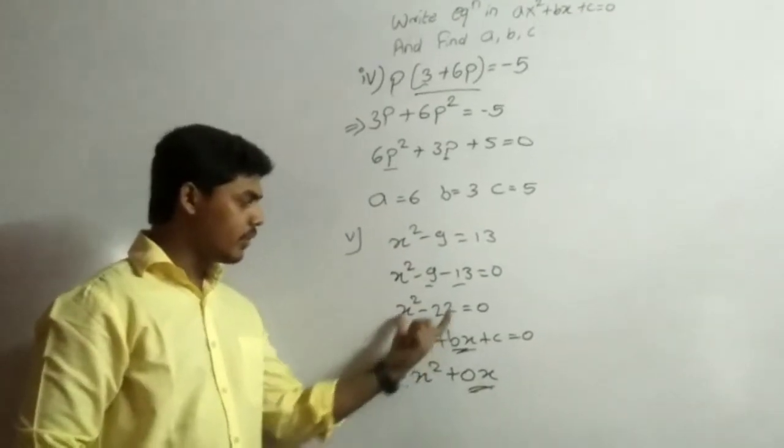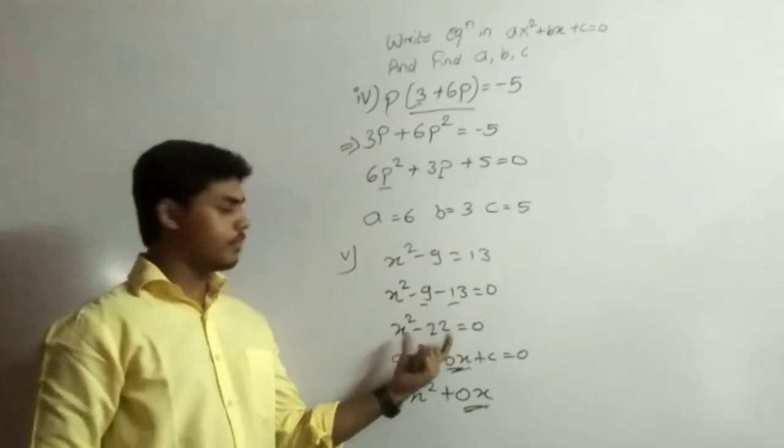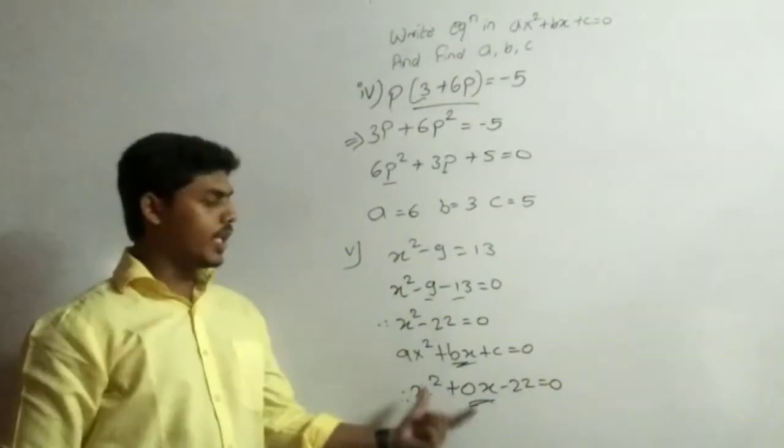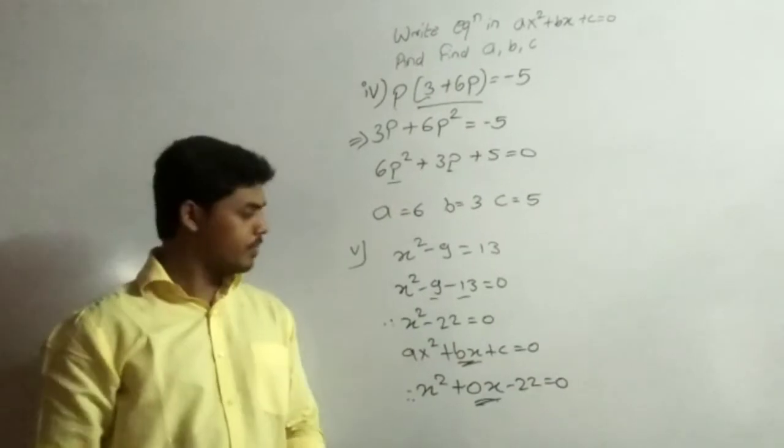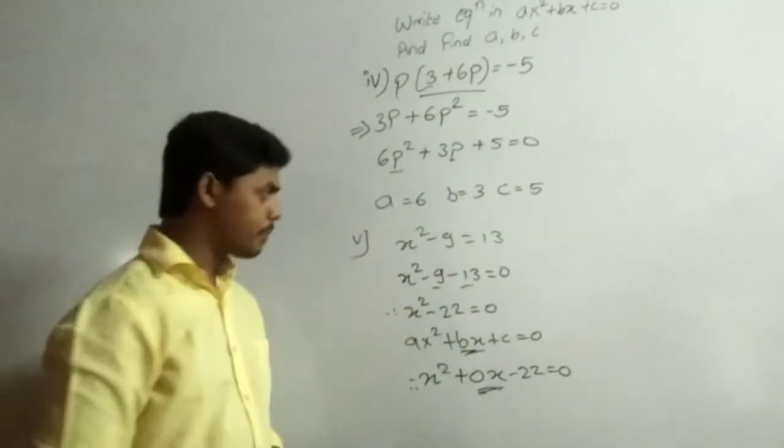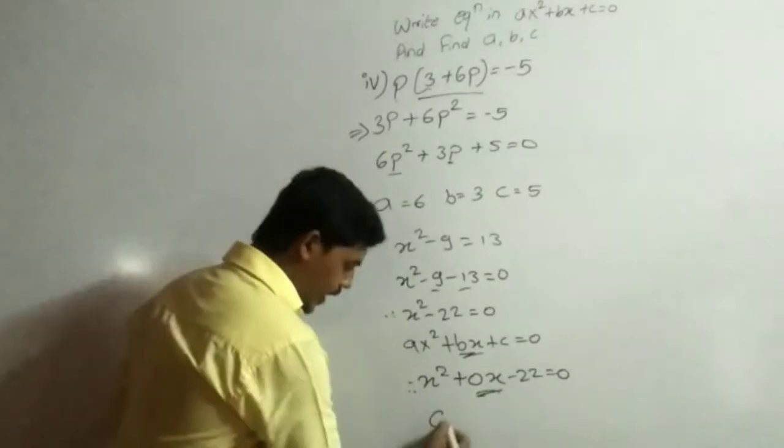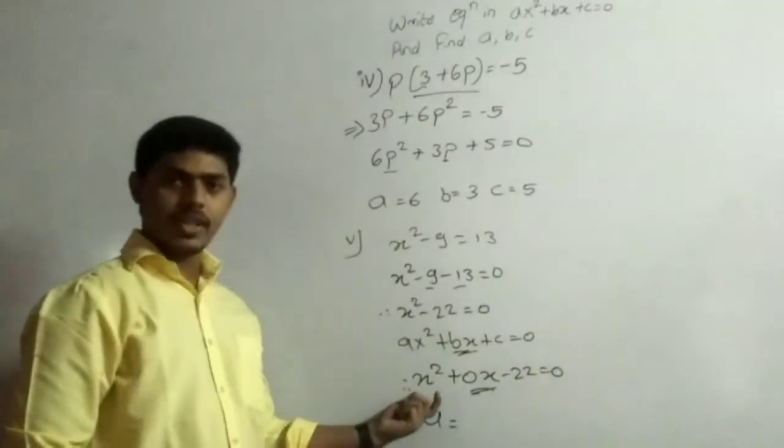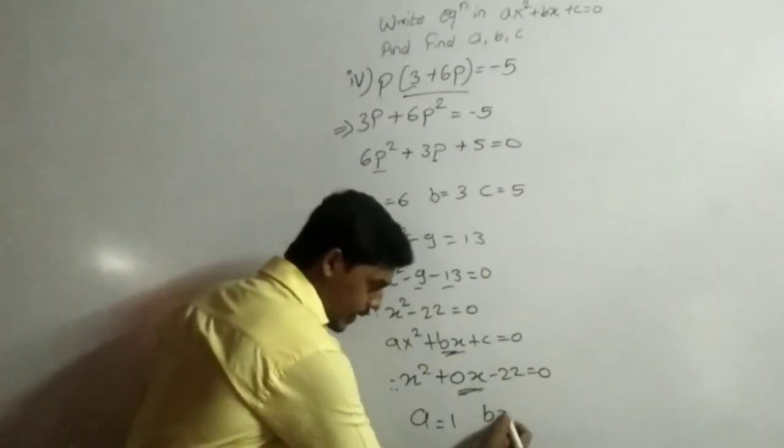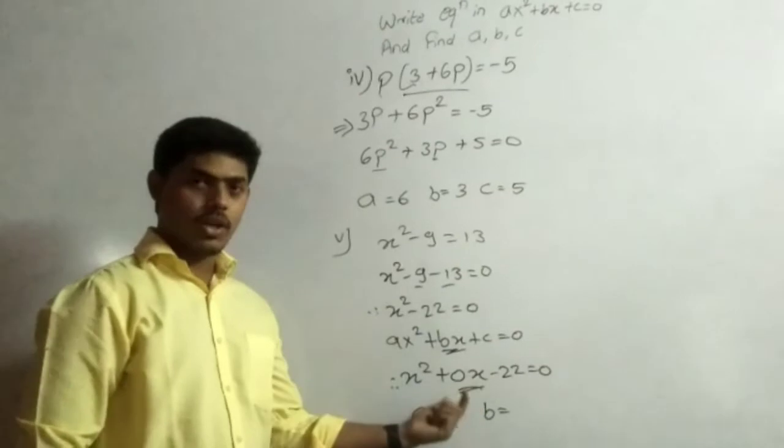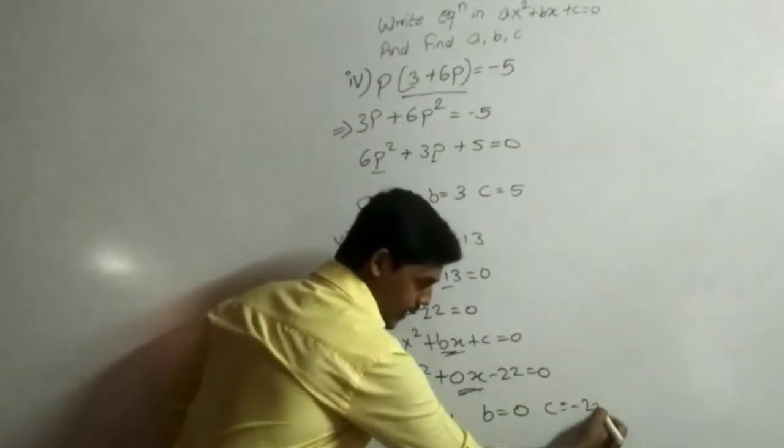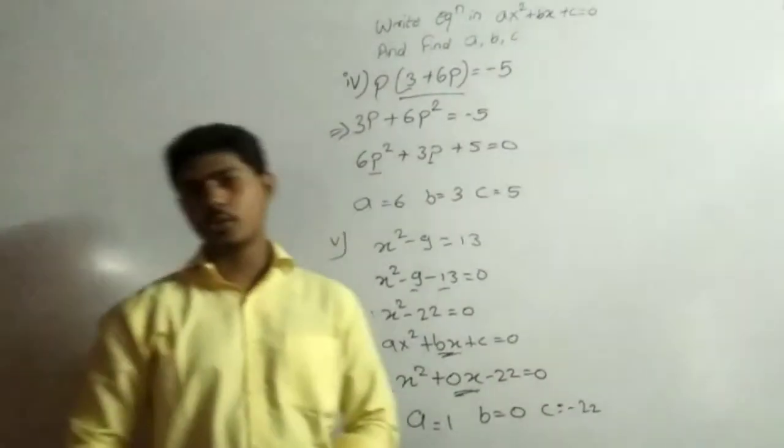This equation change and minus 22 is 0, this is form and after we find out a, b and c. A is 1 and c minus 22. I hope that you can understand.